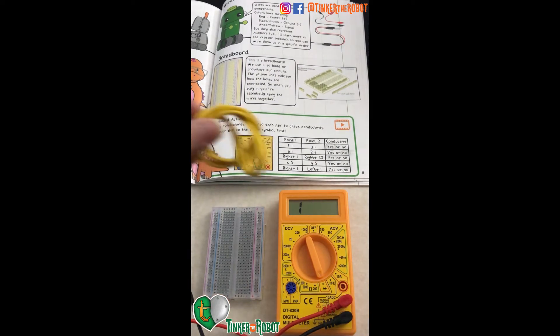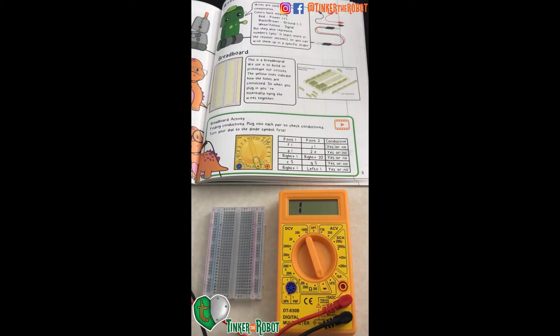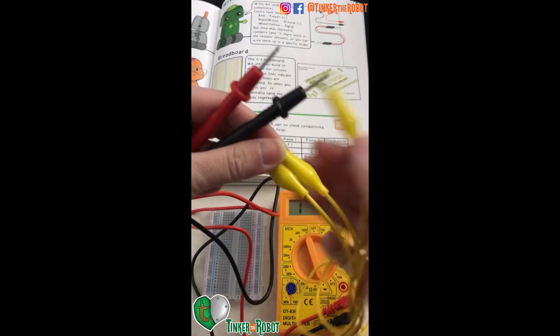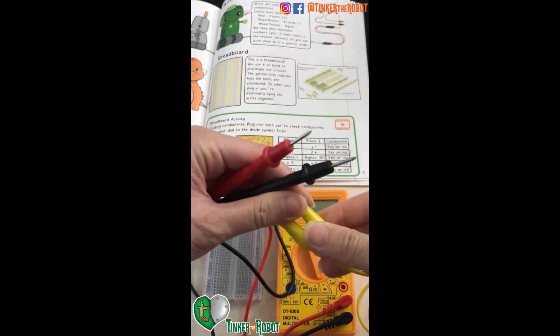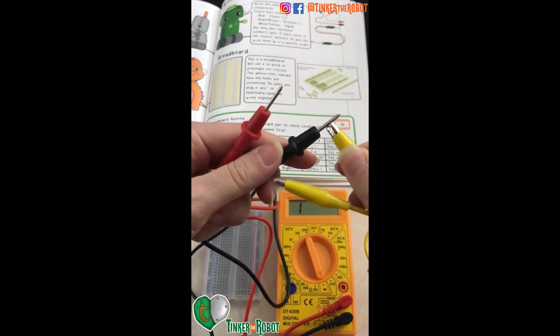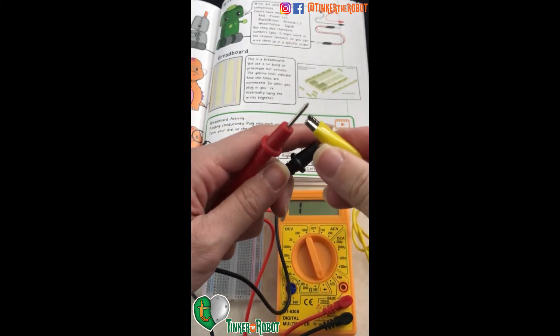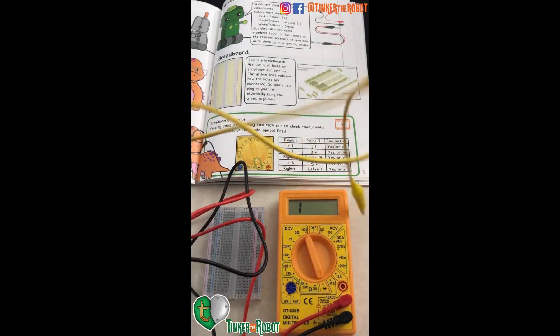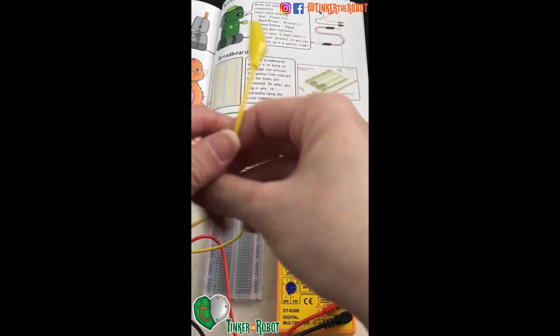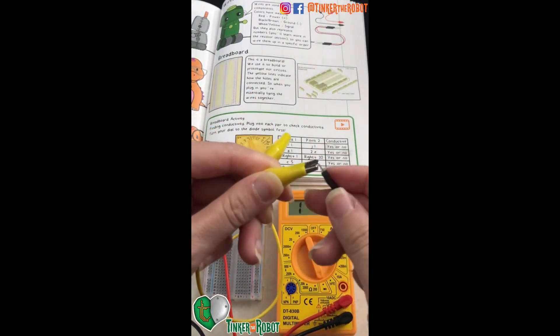Now we're going to take our alligator clips and clip them onto our probes. Take one probe and clip, and the other probe and clip. And then on the other end of your alligator clips, clip them to your jumper wires.